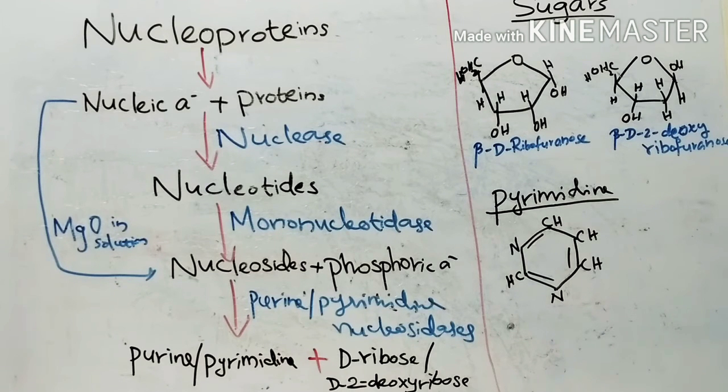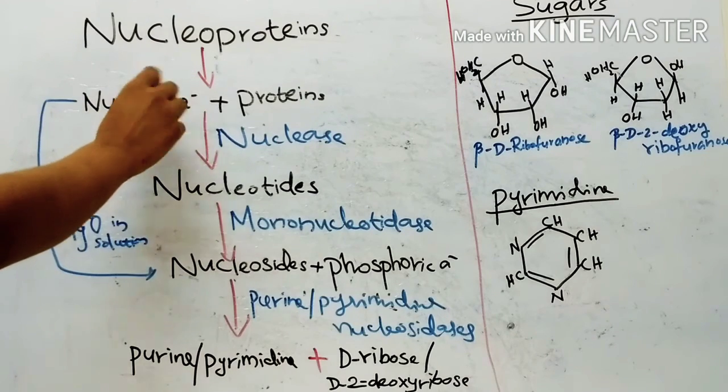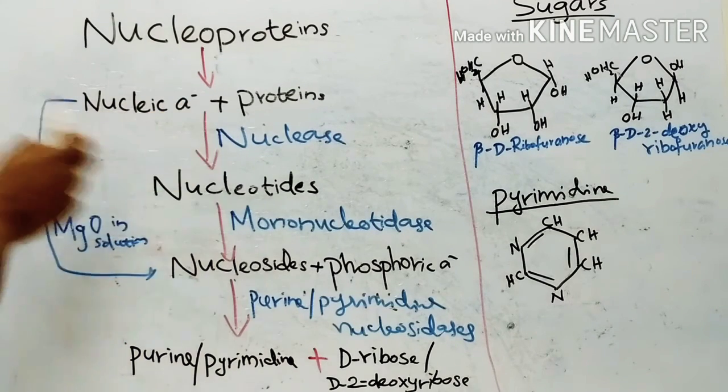Nucleoproteins are so named because they constitute a large part of nuclear material. Nucleoproteins are found in all animal and plant tissues. When the purified nucleoprotein is hydrolyzed with acid or by the use of enzymes, various components are obtained.